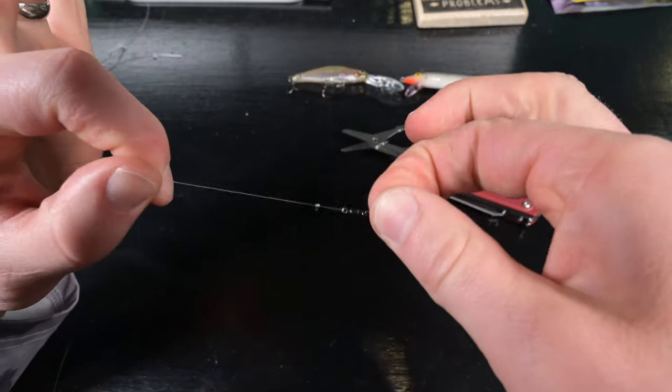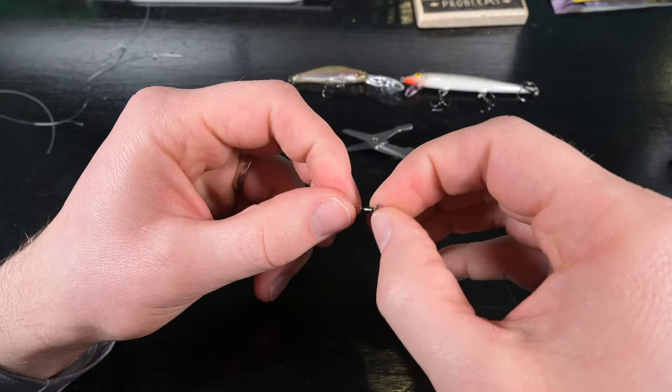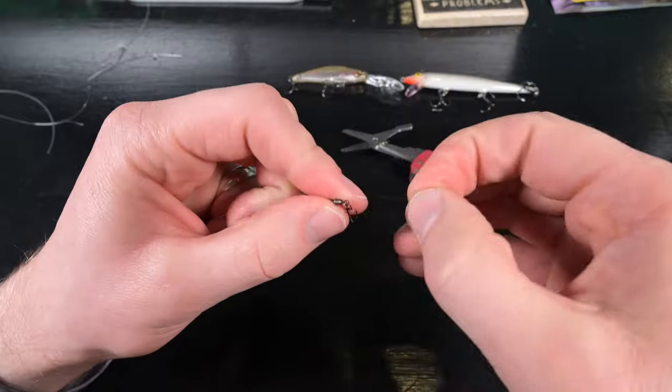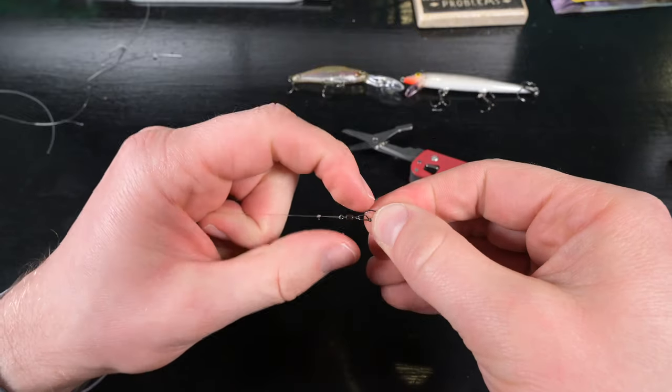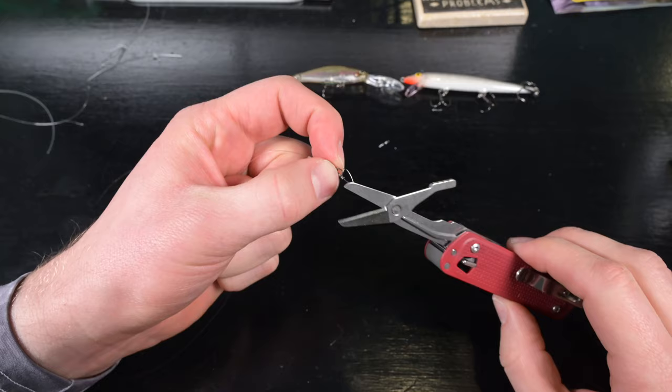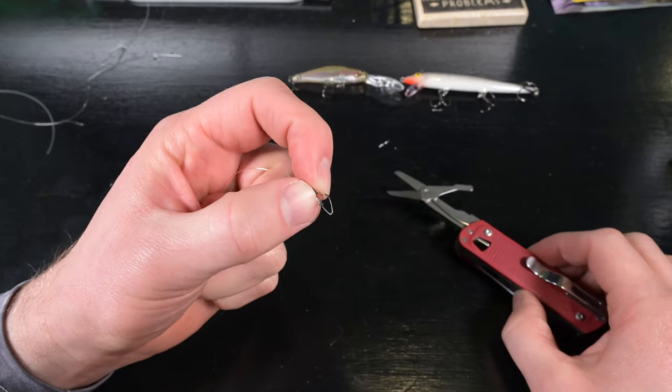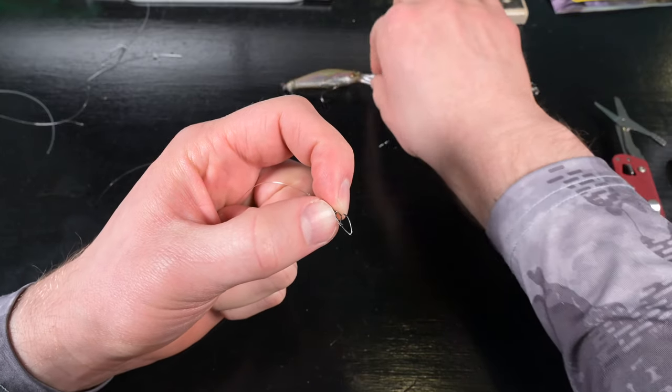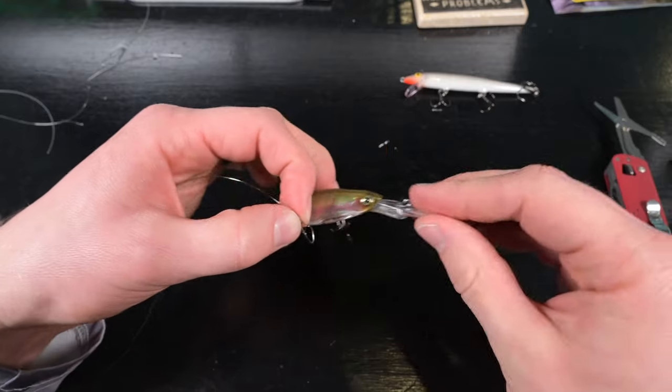What you have is the perfection knot which creates a nice loop, and then you have your swivel. I can put all types of baits on here, so I don't have to retie a knot every time I want to change my lure.